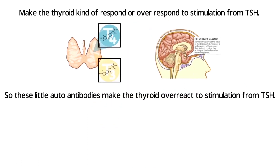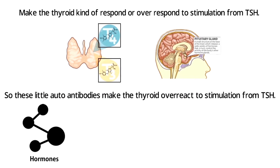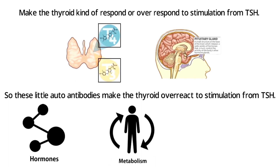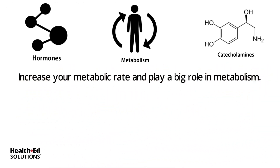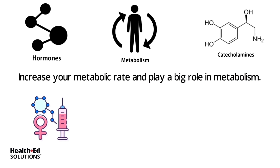T3 and T4 play a huge role in metabolism. They also make your body respond more efficiently to catecholamines, so not only do they increase your metabolic rate, but they also make your body more responsive to those fight-or-flight hormones. Now that you understand what T3 and T4 do, you'll be able to understand what's going on in the body when these hormones are overproduced.